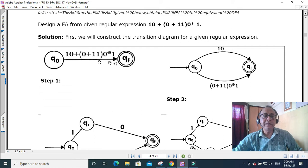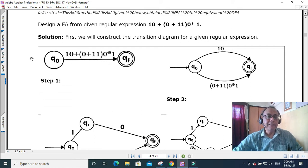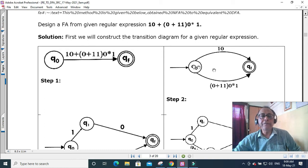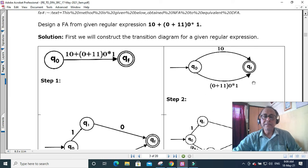So this regular expression, this is the easiest step. This is the start state and this is the final state and here is the regular expression. Then what should be the next step? Obviously, because of the plus that means or, I can put it as separate. So from q0 to qf, one way you can reach 10. So this is the way 10 and the other way is (0 + 11) 0*1. So this is the second stage, step 2.